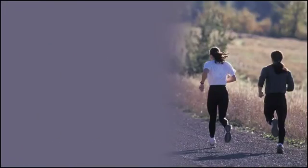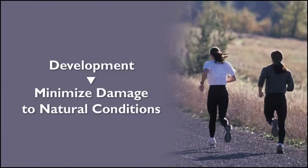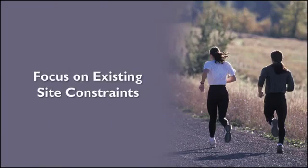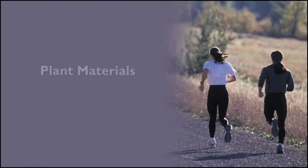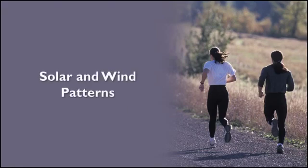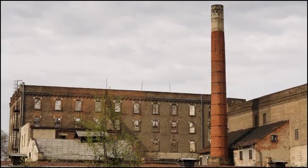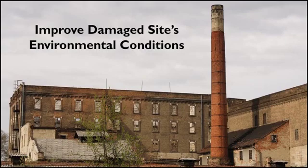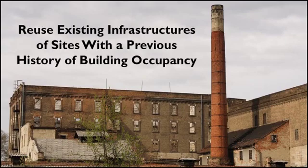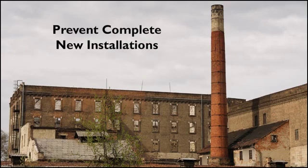Do as little to the site's environment during development to minimize further damage to the natural conditions. Pay attention to the existing site constraints, such as contours, plant materials, and solar and wind patterns. While designing structures for the site, consider placing them to take advantage of existing conditions, or restore a damaged site's environmental conditions to make it better than when the project started. Sites with previous building occupancy typically have much of the needed infrastructure already in place that can be reused, providing the beginnings of systems that can prevent complete new installations.